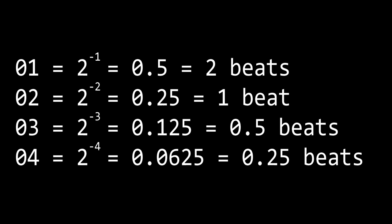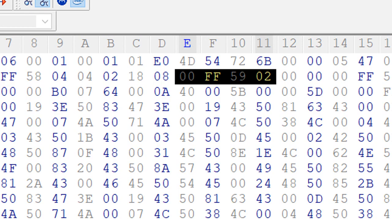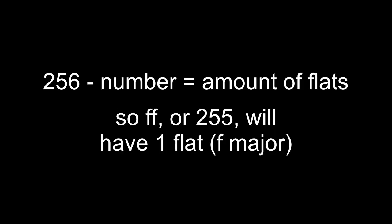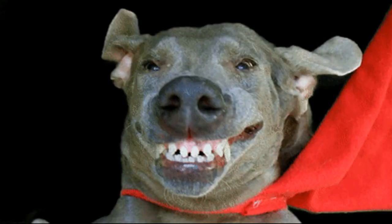So if it is 02, then it will be 1 beat, and if it is 03, then it will be half a beat. So if the first two bytes are 04 and 02, then the time signature will be 4 beats, with each beat being a quarter note. Then, find the next 00 FF 59 02. The next byte after that will determine the key signature. Convert it to decimal. If the value is pretty high, then it will use flats — the difference from 256 will determine the number of flats. If it is pretty low, then the value will be the number of sharps. That is all you will need to know for the beginning.